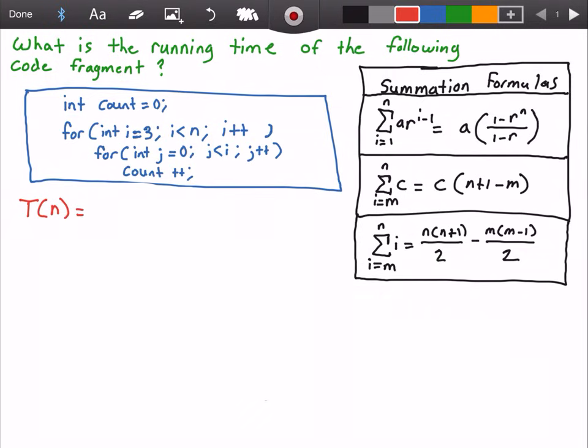And I'm going to set this equal to the summation from i equals three all the way up to n minus one. And this is because our outer for loop runs from i equals three all the way up to but not including n, right, because we have i less than n, so I have n minus one here.